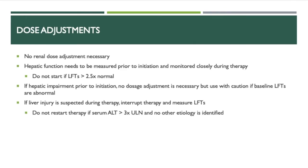For dose adjustment, there is no renal dose adjustment necessary for this class of medication. Hepatic function does need to be measured prior to initiation and monitored closely during therapy. It is not recommended to start TZD therapy if LFTs are elevated 2.5 times or more than the normal limits at initiation. If hepatic impairment is identified prior to initiation, no dosage adjustment is necessary, but caution needs to be taken if values are abnormal. If liver injury is suspected during therapy, therapy should be interrupted and LFTs measured again. It is not recommended to restart therapy if ALT is greater than 3 times the upper limits of normal and no other cause is identified.